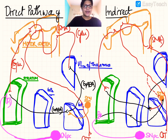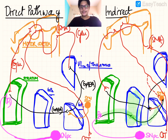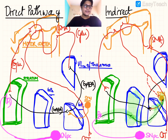In the indirect pathway, the striatum sends an inhibitory signal to the globus pallidus externus. The GPe is normally sending inhibitory signals to the subthalamic nucleus. When the striatum sends inhibitory signals to the GPe, the GPe gets inhibited and stops inhibiting the subthalamic nucleus, so the subthalamic nucleus becomes disinhibited.